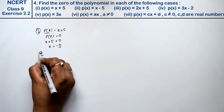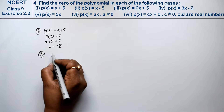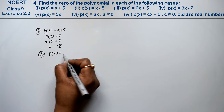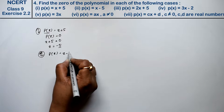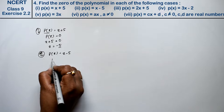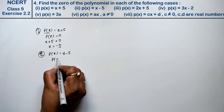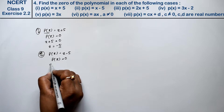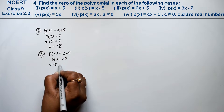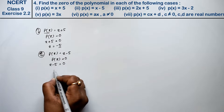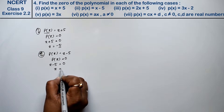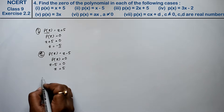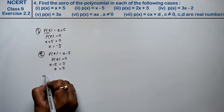Let's do second part. p(x) equals to x minus 5. तो हम p(x) को equal to 0 रखेंगे, that means x minus 5 equals to 0. तो x की value कितनी आगई? 5 — क्योंकि यह minus का था, इधर आके positive हो गया.